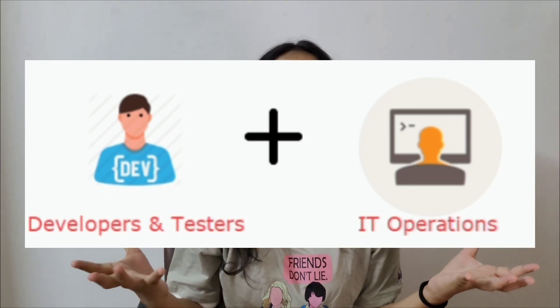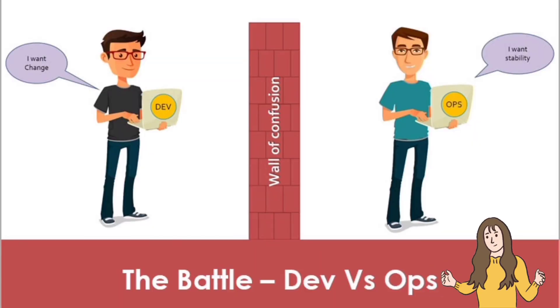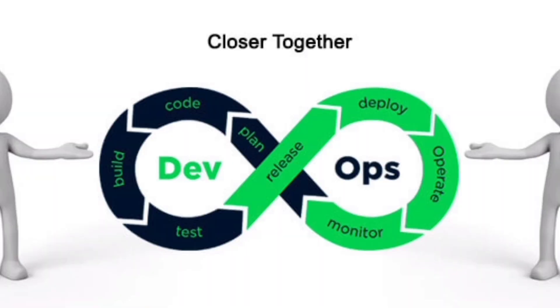So let's start with DevOps. DevOps is a combination of development and operations. It's a set of practices aimed at automating and integrating the processes between software development and IT operations teams. The main goal is to shorten the development lifecycle and to deliver high quality software continuously. Traditionally, developers and operations teams worked separately — developers would write the code and then hand it off to the operations teams to deploy and maintain it. This often led to delays, miscommunication and a lot of frustration. DevOps came in as a cultural and technical movement to break all of these barriers.